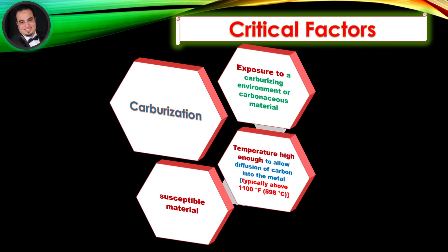Critical factors: As illustrated in the figure, carburization only occurs when a critical combination of three conditions is satisfied: exposure to a carburizing environment or carbonaceous material; temperature high enough to allow diffusion of carbon into the metal, typically above 1,100 degrees Fahrenheit; and a susceptible material.